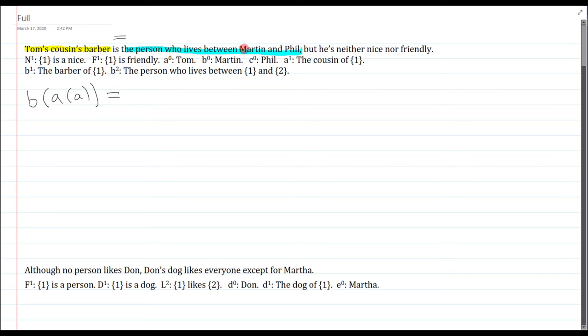So how do I say is? That's equals the person who lives between Martin and Phil. Martin is B, Phil is C, the person who lives between 1 and 2 is B2 so that's just B, B, C. Oh how clever.